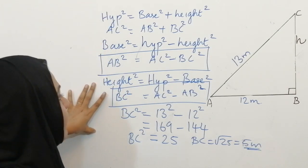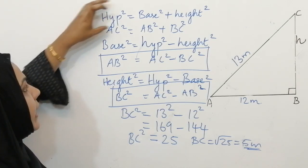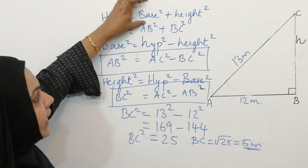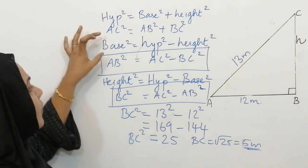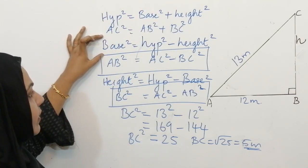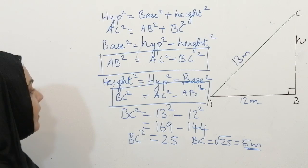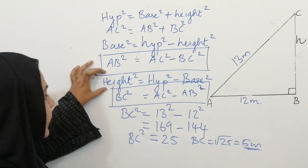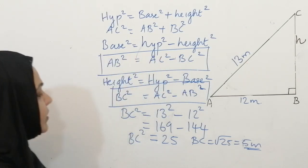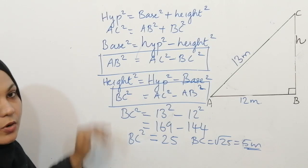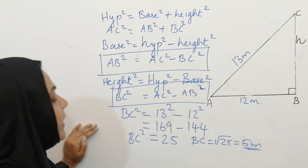I have given all the formulas: for finding hypotenuse square, you add the sum of squares of base and height; for finding base square, you subtract height square from hypotenuse square; for finding height square, you subtract base square from hypotenuse square. I hope you understood all three formulas very clearly.